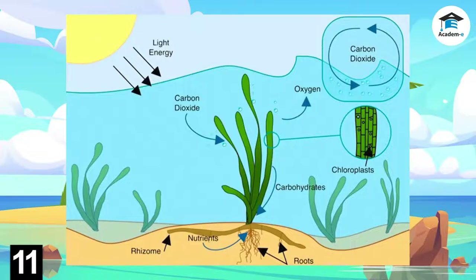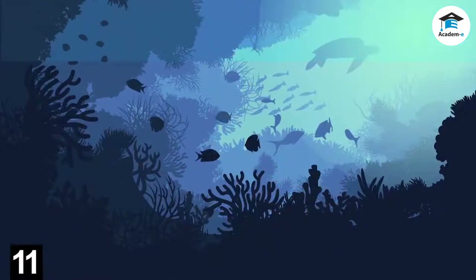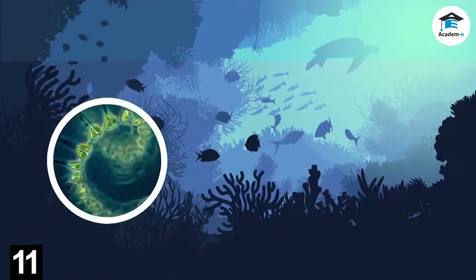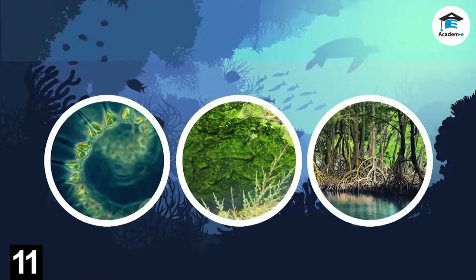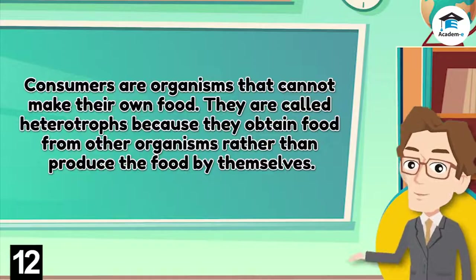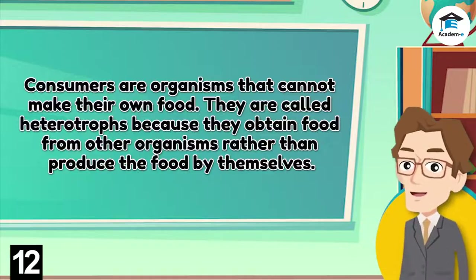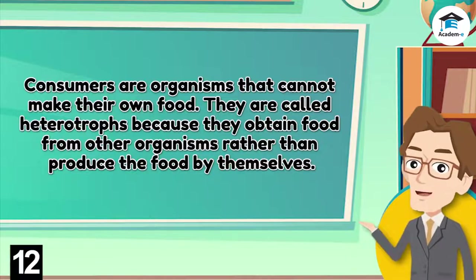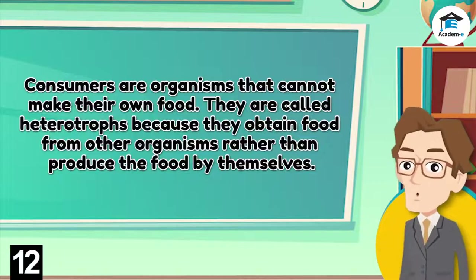Some producers in estuaries are phytoplankton, algae, and mangroves. They are eaten by other organisms such as animals, also known as consumers. Consumers are organisms that cannot make their own food — they are called heterotrophs because they obtain food from other organisms rather than produce it by themselves.